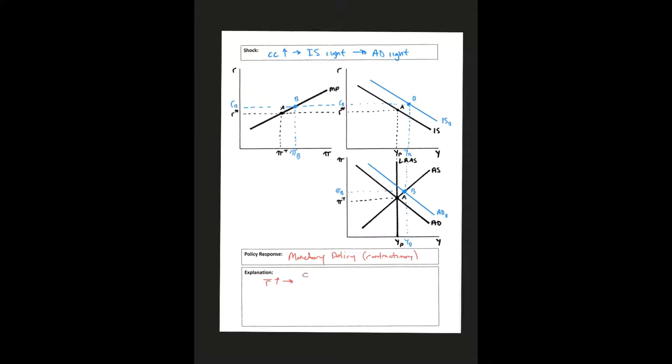Increase in R bar is going to make consumption, investment, net exports, all of those decline, which will then shift my aggregate demand curve back to the left.